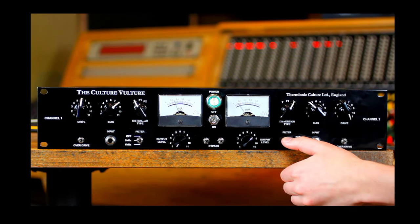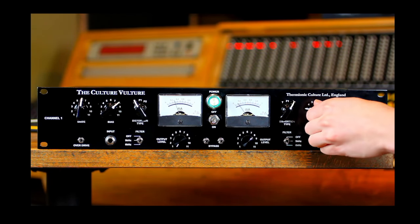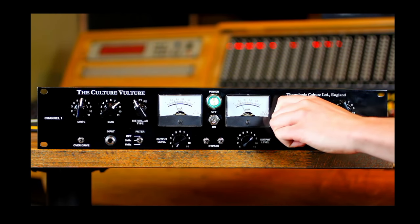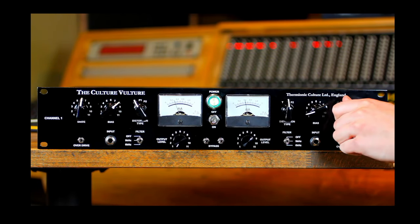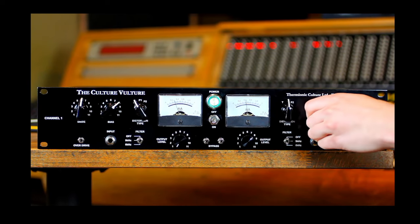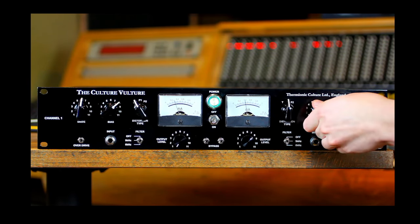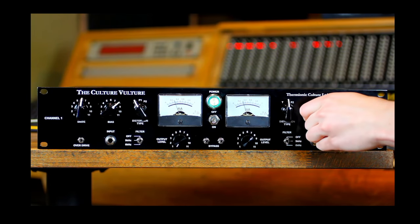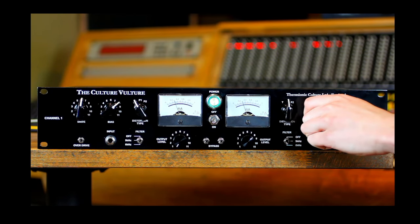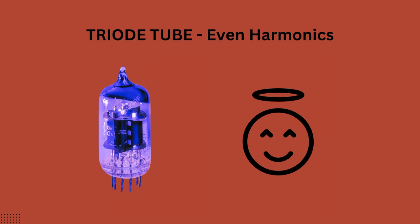Tube saturation is often celebrated for its warmth and smoothness, but you can also get presence and edginess out of tube saturation — it depends on what you're looking for. There are often two different types of tubes used: triodes and pentodes. If you're looking for a more warm, fat, and subtle type of saturation to warm up your low end, I would go for a triode tube, because they give more even harmonics.